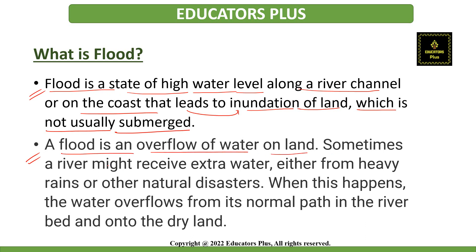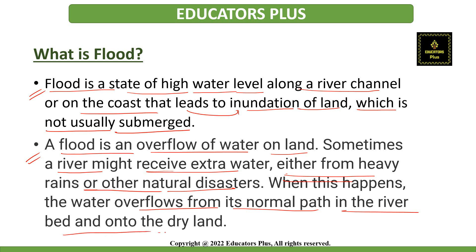Basically, a flood happens when water overflows onto the land. There are various reasons — sometimes land receives extra water due to heavy rainfall or any other natural disaster, and the water overflows from its normal path in the riverbed onto dry land.